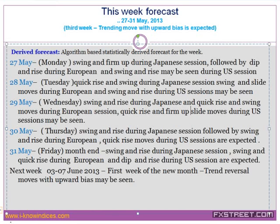Then a slide during the US session on 29th. On 30th May, swing and rise moves are expected during the Japanese session, followed by swing and rise during European, and a quick rise is expected during US session. They drop first and buy, then quickly rise and book profit — this is what they are doing for a prolonged period. This is an accumulation strategy — they book profit and add to new entries, so buy values come down.